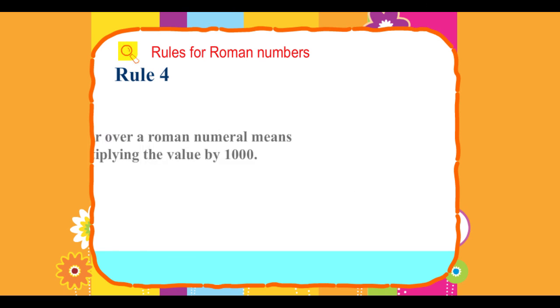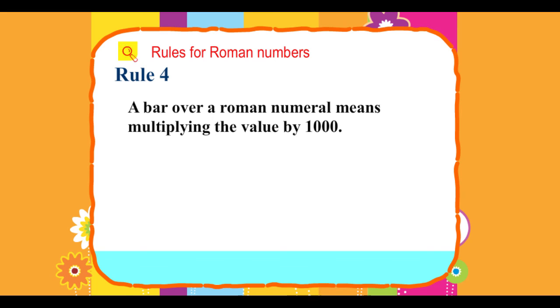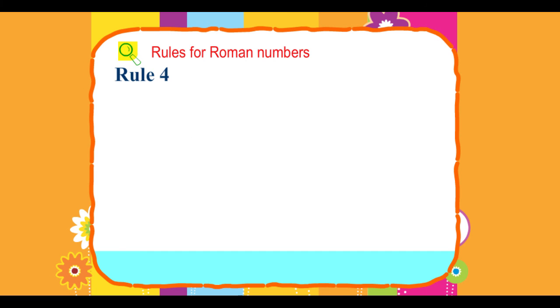Rule 4: A bar over a Roman numeral means multiplying the value by 1000.